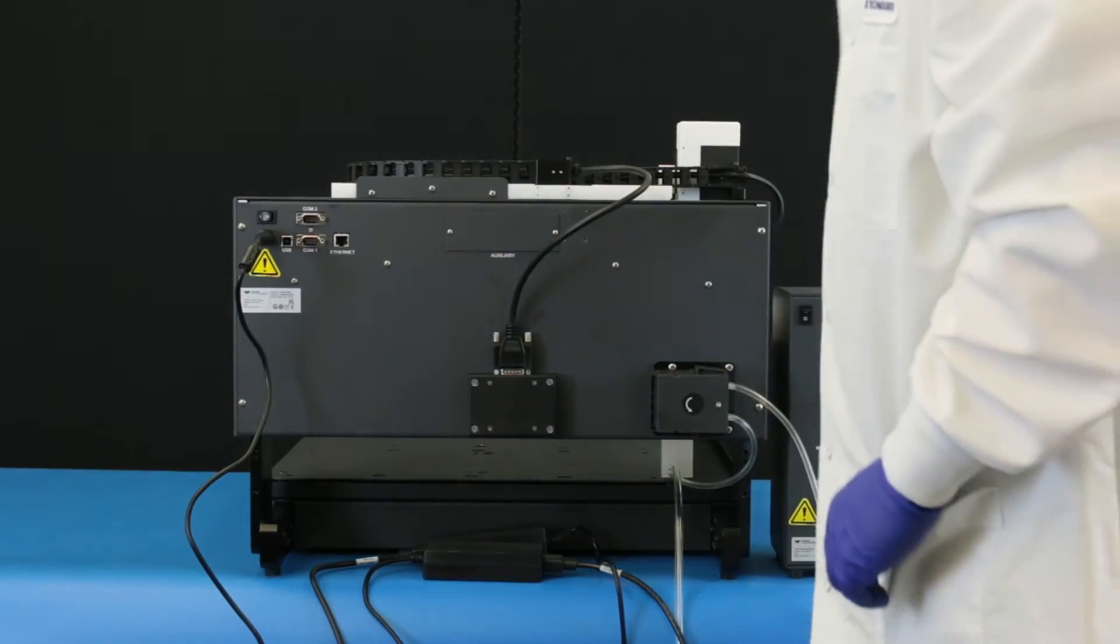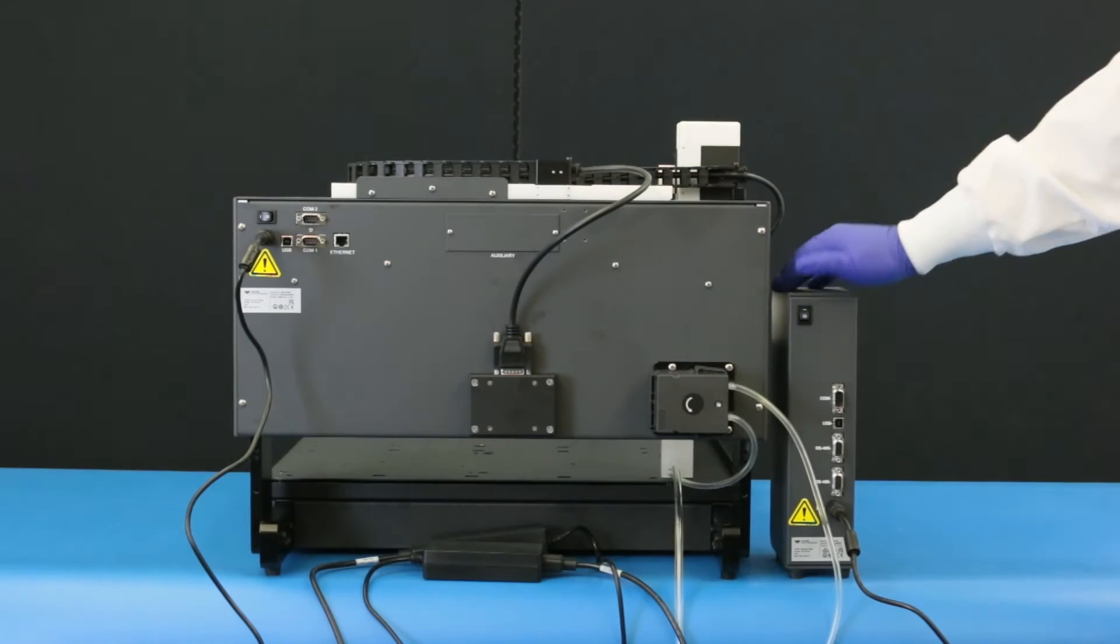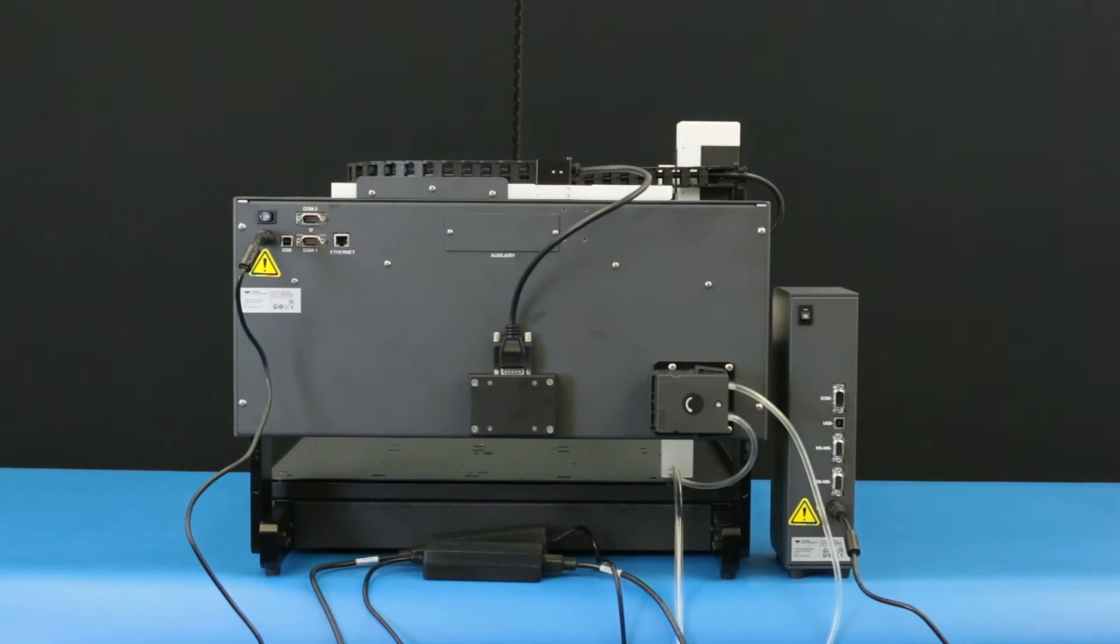Turn the power switch on the autodiluter on. Then turn the power switch for the syringe pump module on.